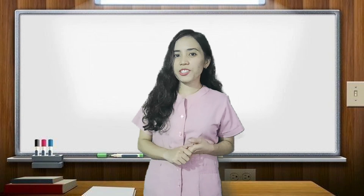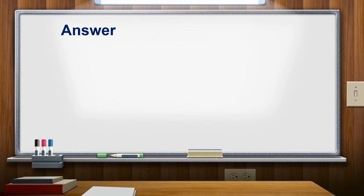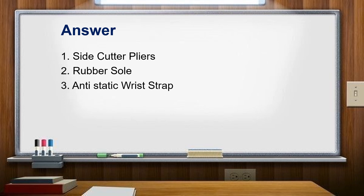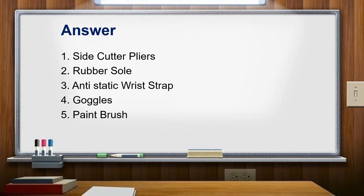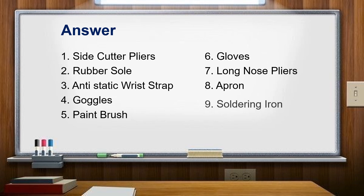Now let's check your answers. Number 1: side cutter pliers. Number 2: rubber sole. Number 3: anti-static wrist strap. Number 4: goggles. Number 5: paintbrush. Number 6: gloves. Number 7: long nose pliers. Number 8: apron. Number 9: soldering iron. And number 10: face mask.